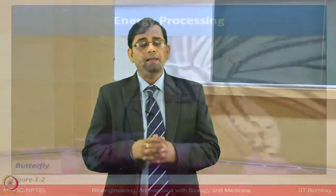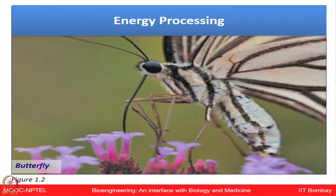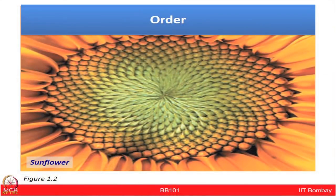Let us start with energy processing. The butterfly shown is trying to obtain energy from the nectar of flowers. The hummingbird uses chemical energy stored in its food to power flight and other activities. Now let us look at the sunflower — how much orderliness we have in this flower, illustrating a very beautiful example of the symmetrical structure that characterizes life.